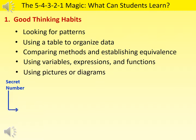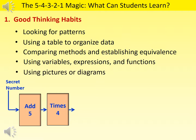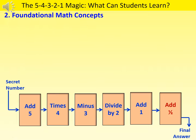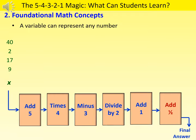Another good habit is to draw pictures. Here we can use a diagram to represent the six steps in the 5-4-3-2-1 magic. Each operation in the six steps is represented by a box, which can be interpreted as a function. Since different students have different secret numbers, we can use a variable, say the letter x, to represent all possible secret numbers. The use of a variable to represent any number is a foundational concept in algebra.